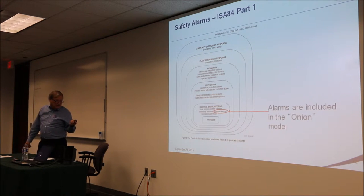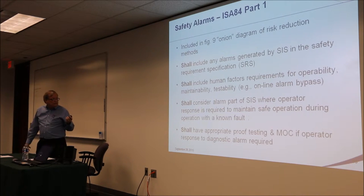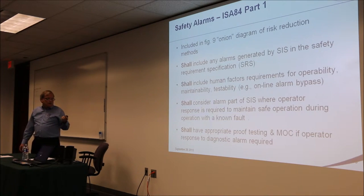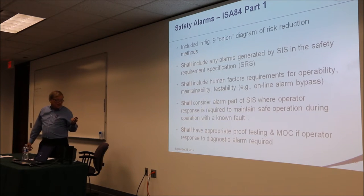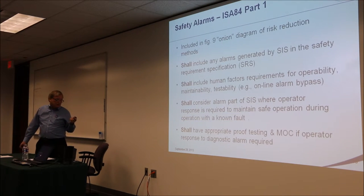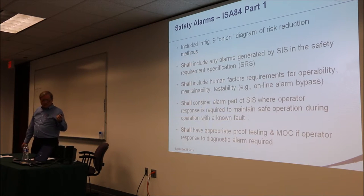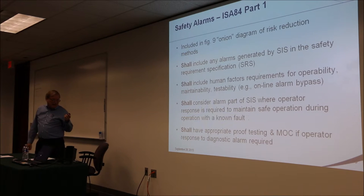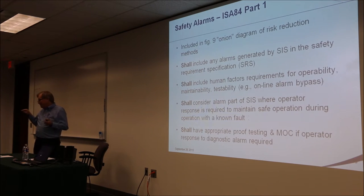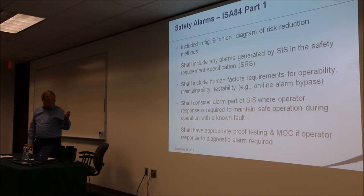In the typical risk reduction methods shown in the so-called onion model, alarms are clearly identified as one of the methods. Some of the shall statements and requirements include: alarms generated by the SIS shall be in the SRS; human factors requirements for operability, maintainability, and testability must be included; and you shall consider an alarm part of the SIS if the operator must respond to maintain safety — for example, if an alarm indicates an operator has to hit an ESD. In that case it needs appropriate proof testing and MOC.